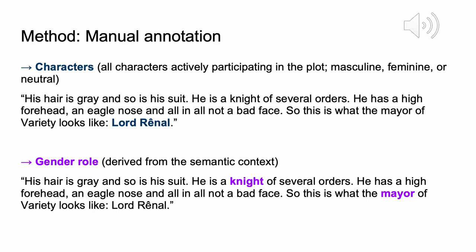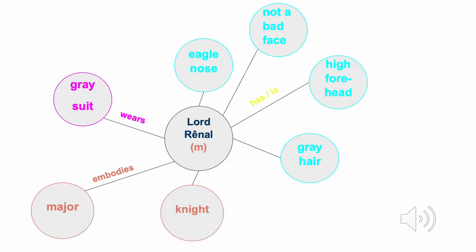Thirdly, we annotated all characters actively participating and intertwined with other characters in the plot, using three different categories: male, female, and gender neutral. As you can see, Lord Renal is one of the male characters. Last but not least, we annotated gender roles like Major or Knight and assigned them to the character they refer to. After annotating character features, characters and roles, we transferred them into networks. We also always linked the annotations to the novel they were mentioned in. After the annotation phase, we built separate graphs for the 19 novels and one large network involving all of them. By comparing the different networks to each other, we made out five different types of recurring social setups, and by interpreting the whole graph we identified what we call a gender sphere.